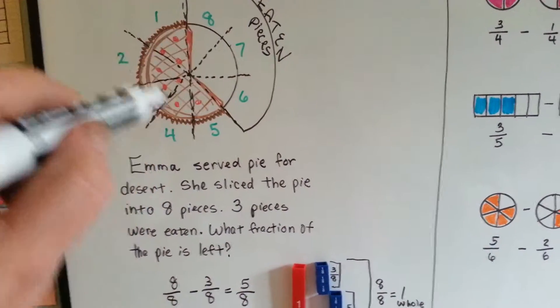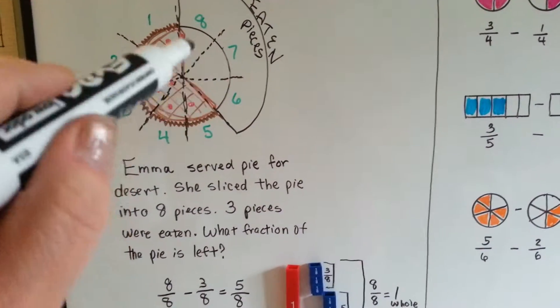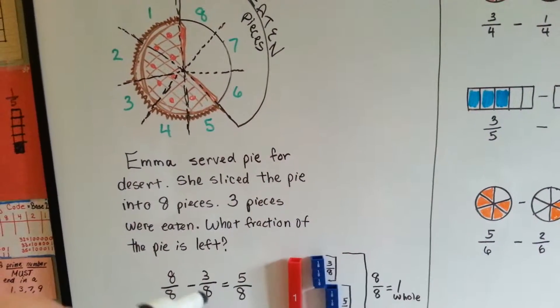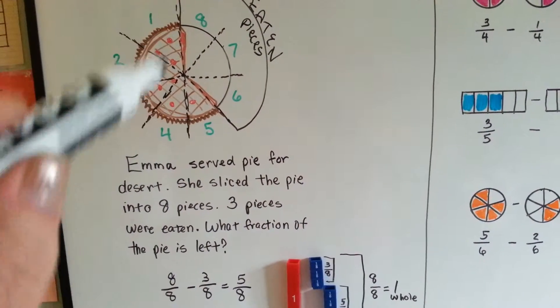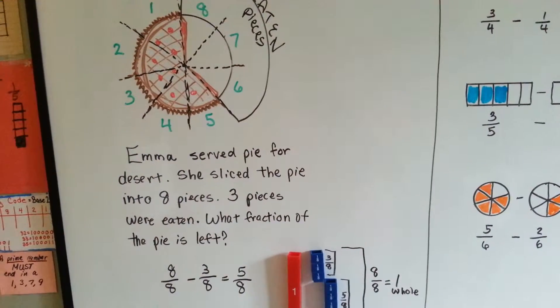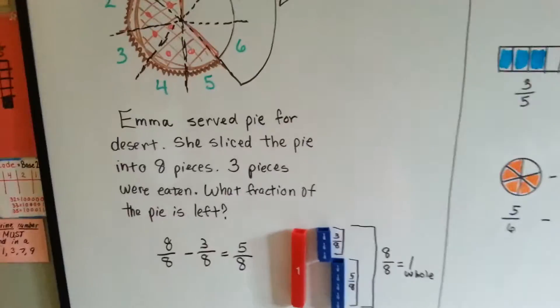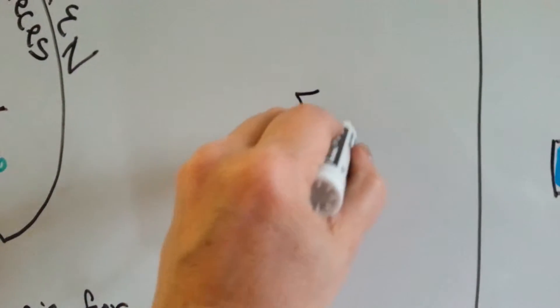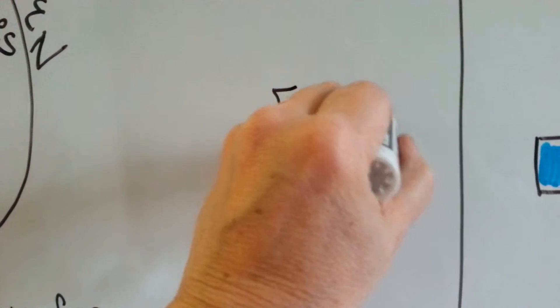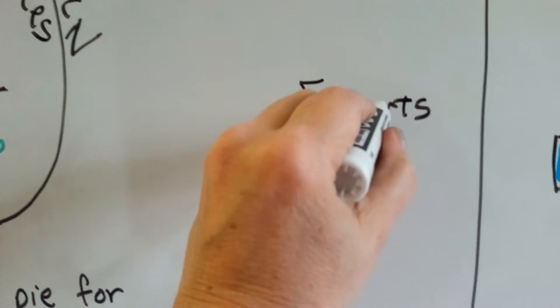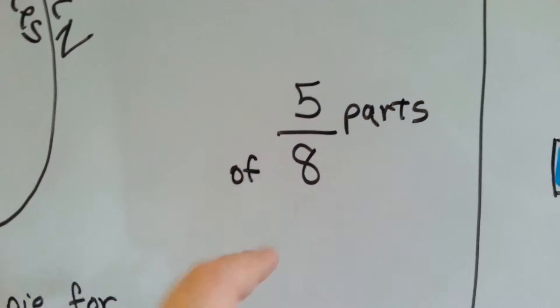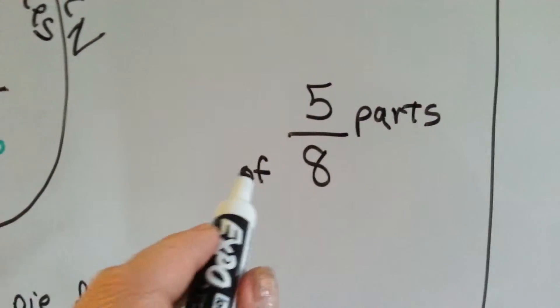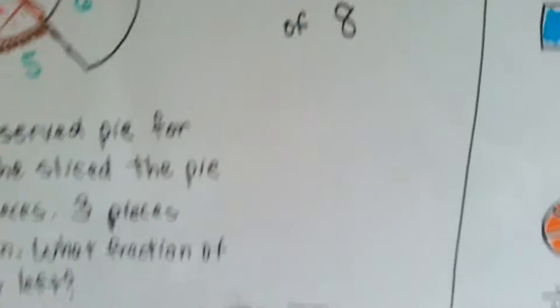Eight pieces of eight. Three were eaten. Three pieces of eight were eaten and that left five eighths. Five pieces of the eight. You can look at a fraction like this. You can put the word parts there and you can put of here and it'll help you realize what that fraction is. It's five parts of eight.